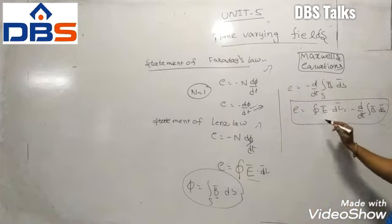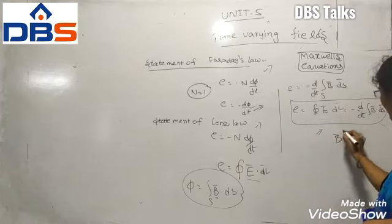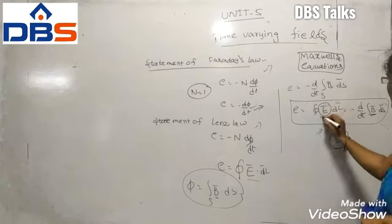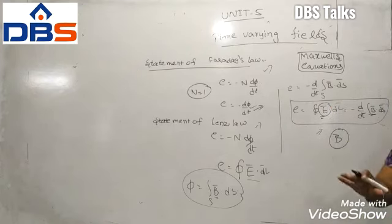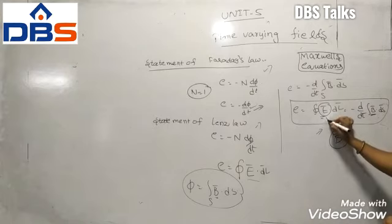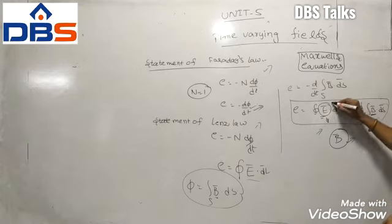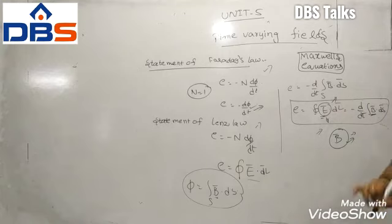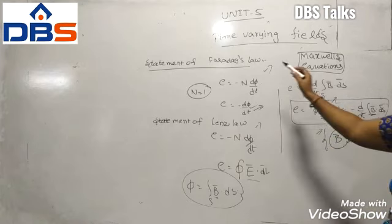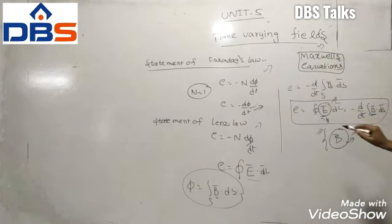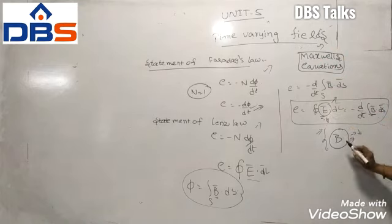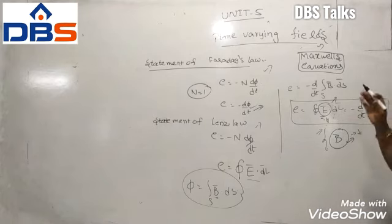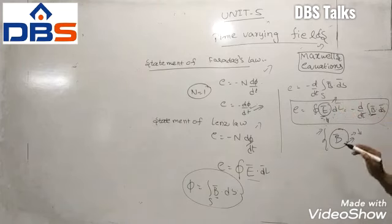From this equation you can note that the main terms are B-bar and E-bar. You can observe that in one case B-bar will be stationary and E-bar will be time varying. In another case E-bar will be constant and B-bar will be time varying. Or in some cases both E-bar and B-bar are time varying fields. This is the statement of Faraday's law and Lenz's law in time varying fields, with three distinct conditions.